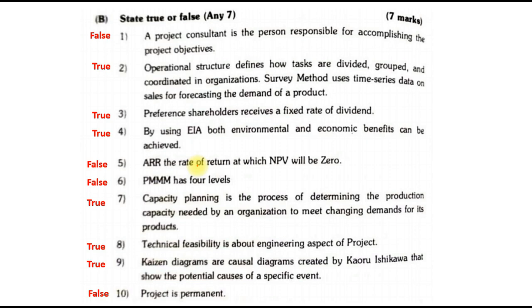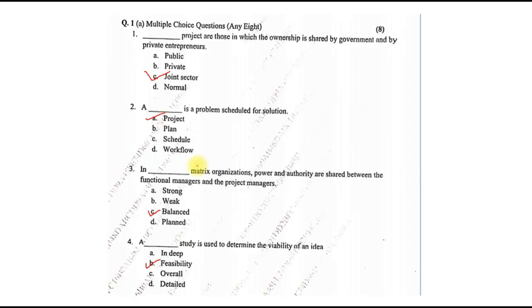So along with the MCQs, these were the true or false questions which had appeared in the October 2022 paper. Next, April 2023 — the very first type of question was MCQs again. Projects in which the ownership is shared by the government and private entrepreneurs — the answer is joint sector. A problem scheduled for a solution — that is a project. In a balanced matrix organization, power and authority are shared between the functional manager and the project manager. A feasibility study is used to determine the viability of an idea.